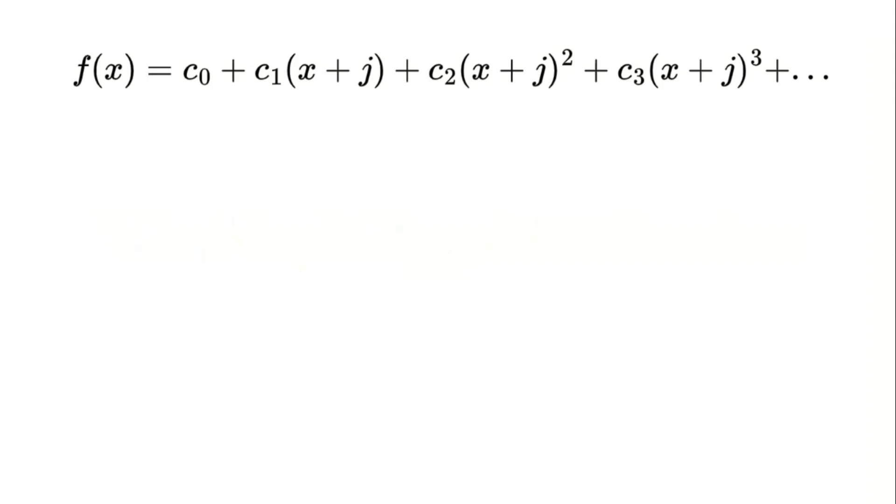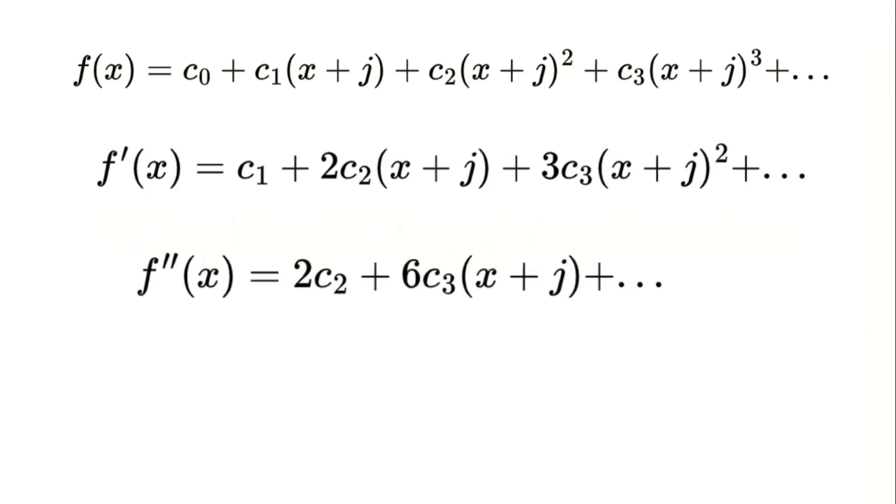Once the series is written, the next step involves calculating the derivatives of the function. The first derivative provides the coefficient of the linear term, while the second derivative relates to the coefficient of the quadratic term scaled by a factor of 2. This process extends to higher derivatives, with each incorporating the corresponding power and constant coefficient following a clear mathematical pattern.